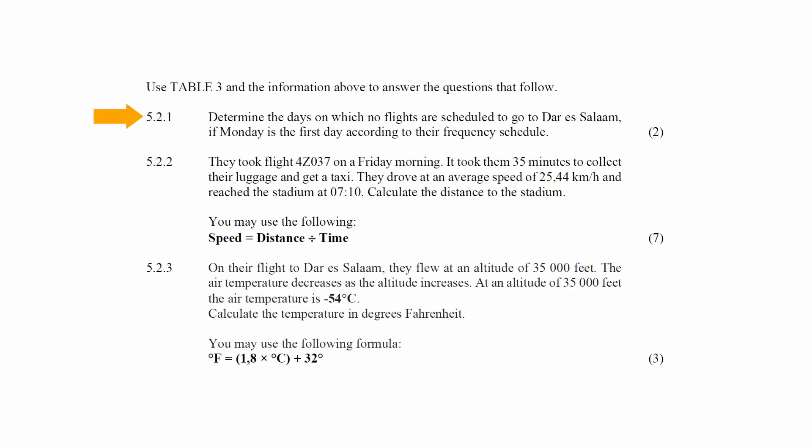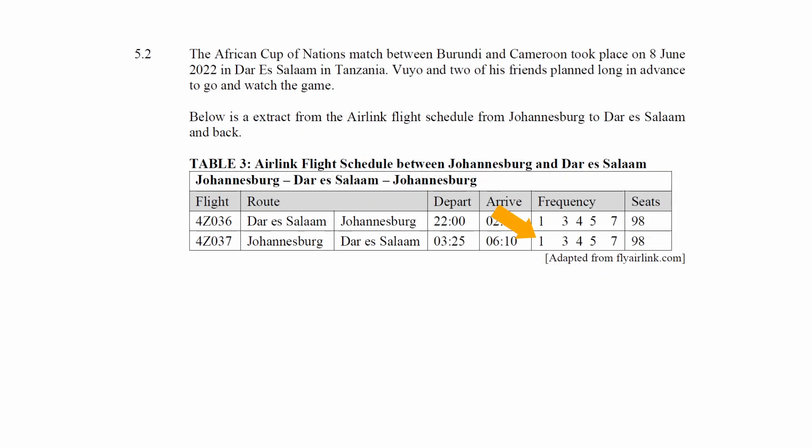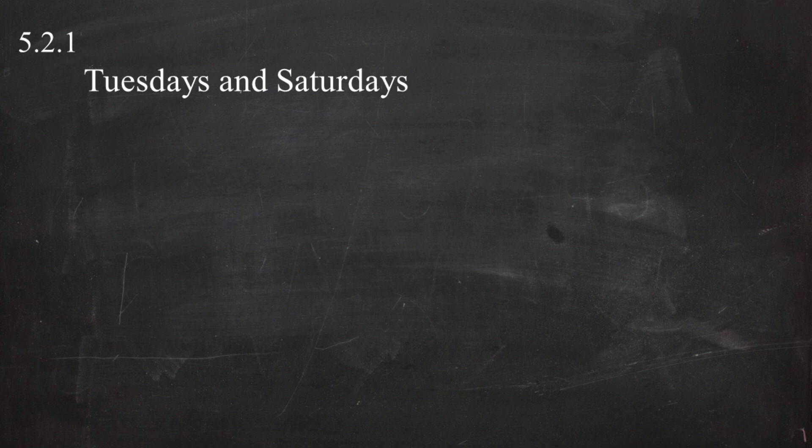In question 5.2.1, you are instructed to determine the number of days on which no flights are scheduled to go to Darul Islam, if Monday is the first day of the week. According to the frequency schedule in Table 3, Monday is day 1 and Sunday is day 7. Numbers 2 and 6 are missing, meaning Tuesday and Saturday have no flights scheduled between Johannesburg and Darul Islam.